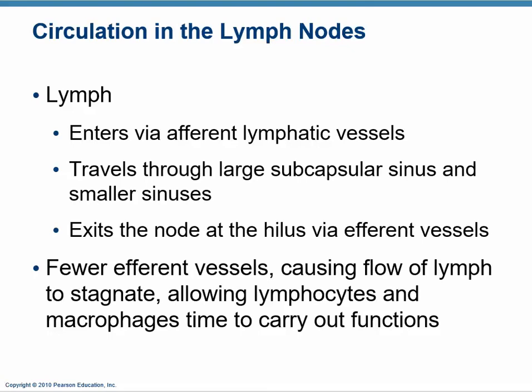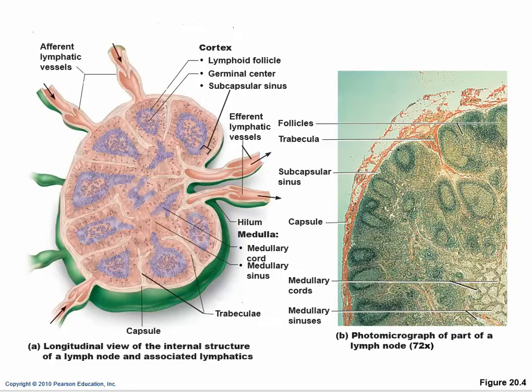The lymph goes into the lymph node through the afferent vessels and passes through sinuses, then exits at the hilum. Just below the capsule — the subcapsular space — is where it flows. You want the lymph flow to slow down in the nodes because you need time to function.